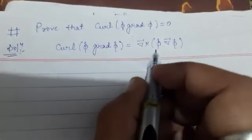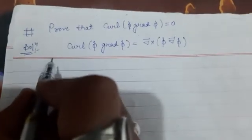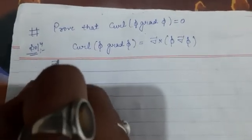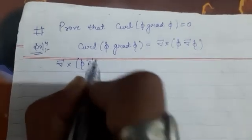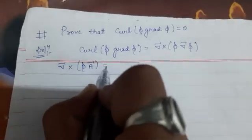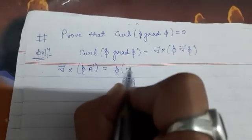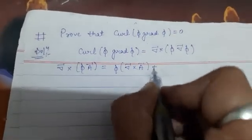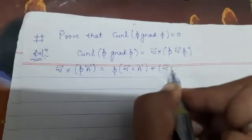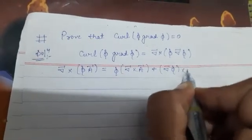The identity we have to use is: del cross (φ into a) equals φ del cross a plus del φ cross a.